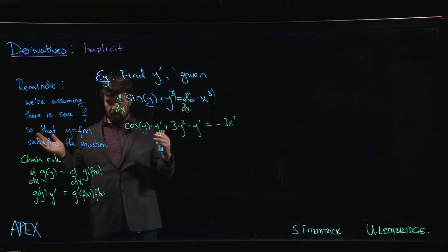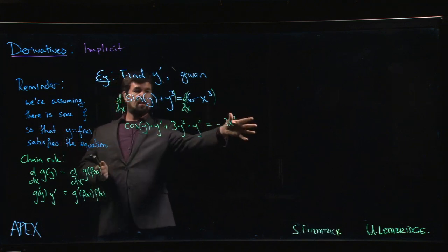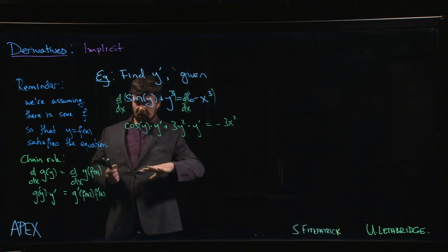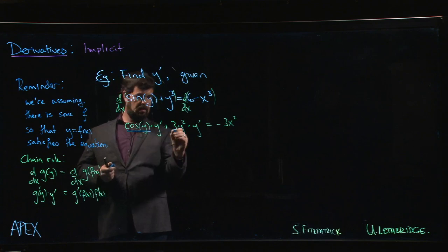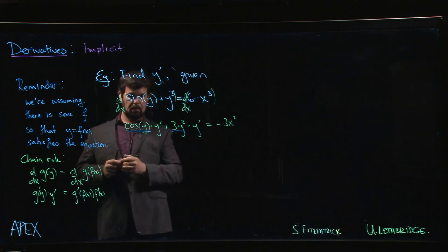You simply have to factor it out. And sometimes there's a y prime over there, you've got to collect terms before you can factor, but all you got to do is really factor it out. So we see that there are two things here being multiplied by y prime.